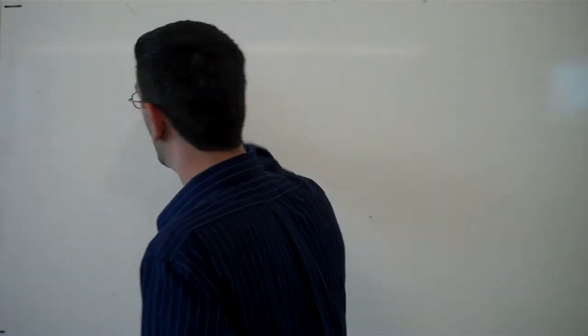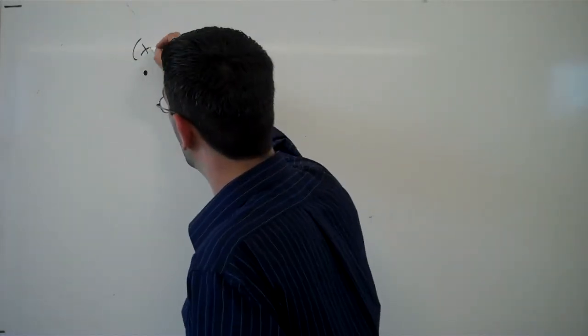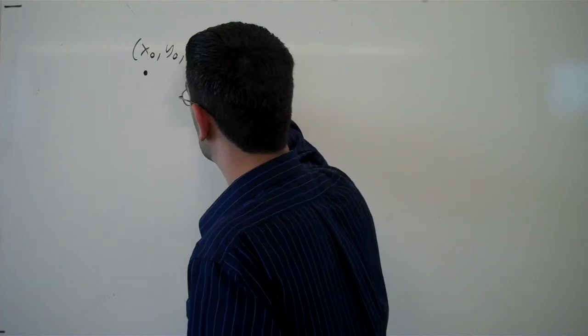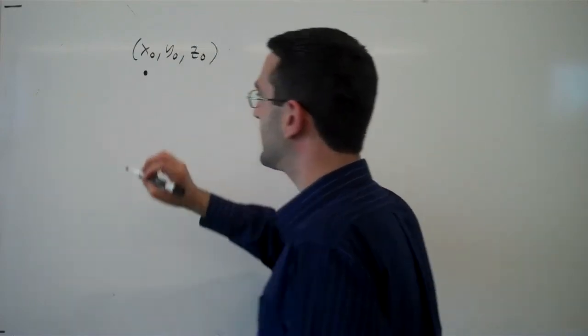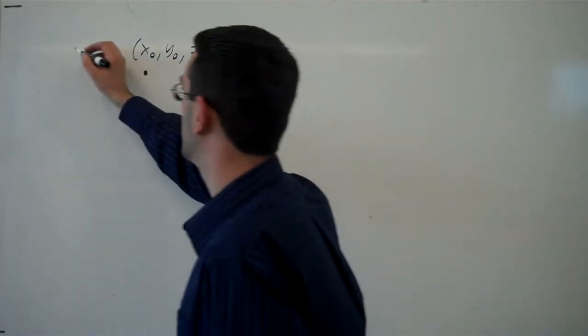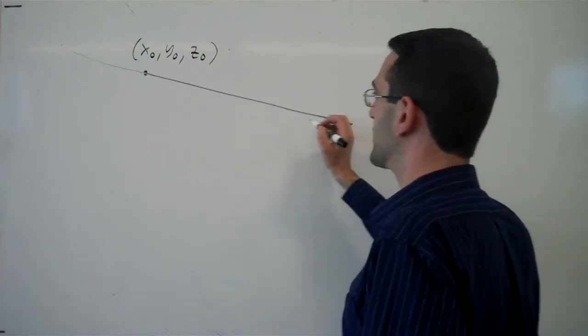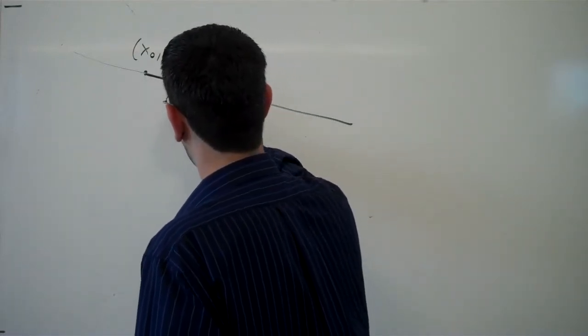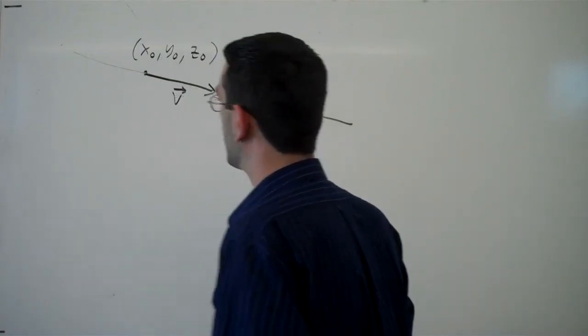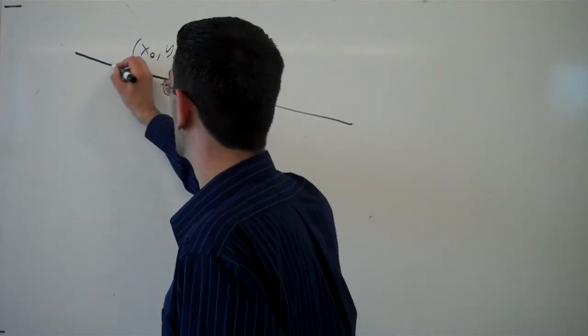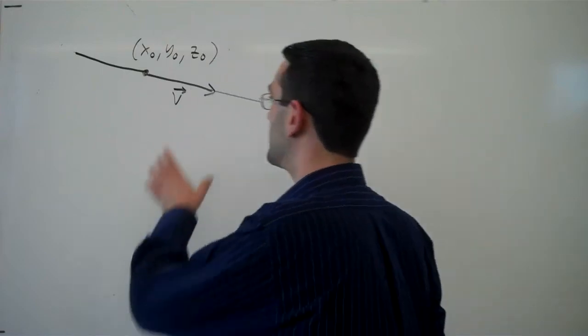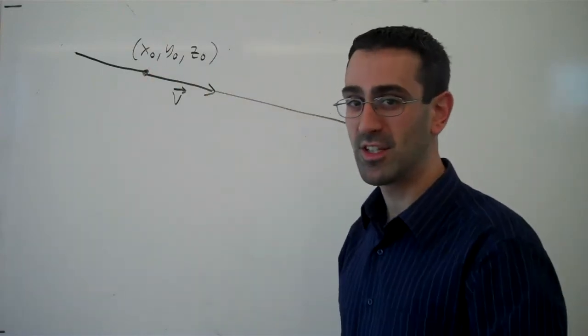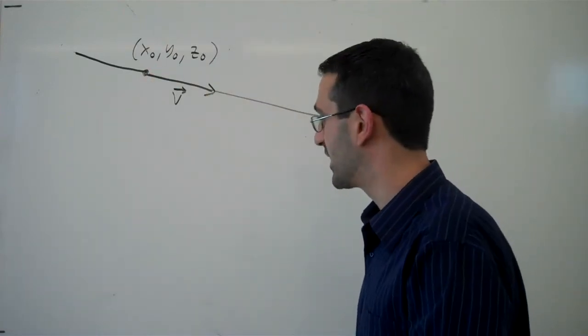So let's suppose I have a point out here, x naught, y naught, z naught, and I have a direction that my line is going to travel in. Let's imagine I have a vector on this line and we'll call it the vector v. We've got a point in space, we've got a vector pointing in the direction of the line or parallel to the line.